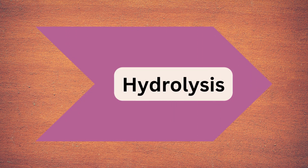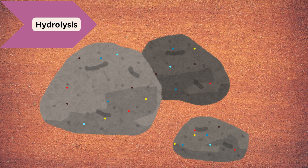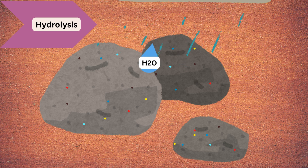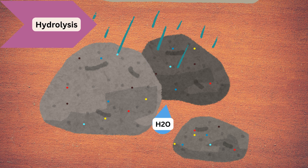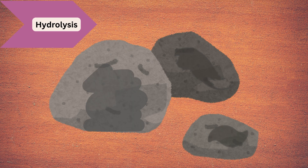Next is hydrolysis. 'Hydro' means water, so water reacts with minerals to form new minerals and soluble salts. The colored dots represent minerals, and the gray patches you can see are the soluble salts formed through this reaction.